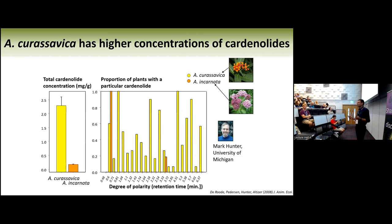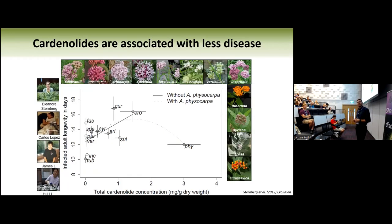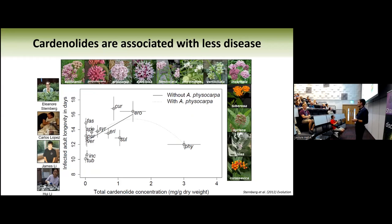There is a beautiful outlier on the far right — Asclepias physocarpa — suggesting that when cardenolide concentrations are high enough, it actually starts being bad for the monarchs too. Monarchs are tolerant, but to a certain level. At some point the benefits of cardenolides being associated with protection against parasites are also going to be bad for the monarch itself.